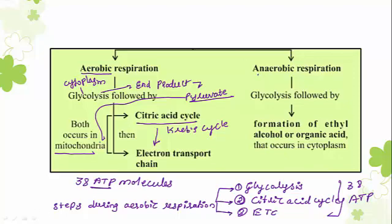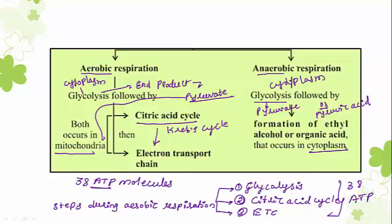Moving to anaerobic respiration: it also starts with glycolysis, and the end product of glycolysis is once again pyruvate or pyruvic acid. The pyruvic acid produced in the cytoplasm remains in the cytoplasm itself, because in anaerobic respiration mitochondria are absent.